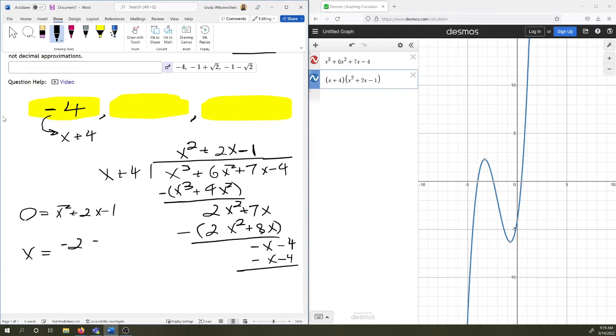So negative B, plus or minus square root, over 2a. So we got negative 2, plus or minus the square root, let's say 4 plus 4 underneath the square root, over 2. So 2 squared is 4. Negative 4 times 1 times negative 1 is 4.